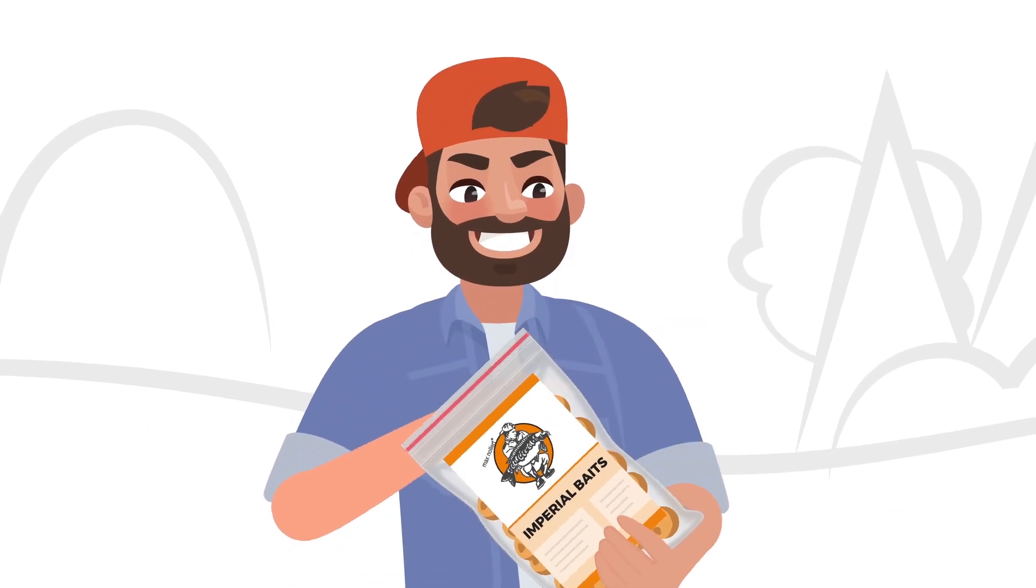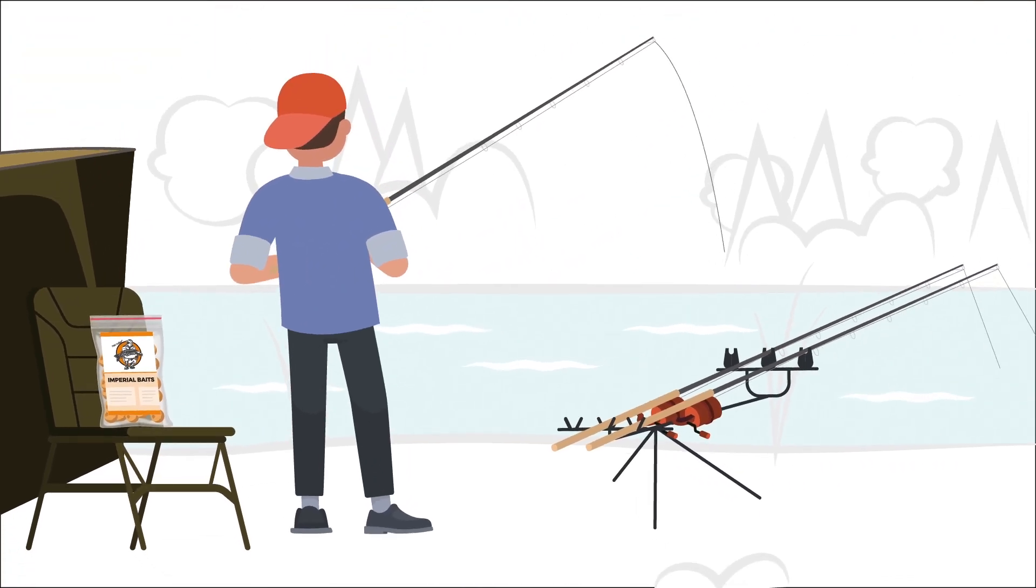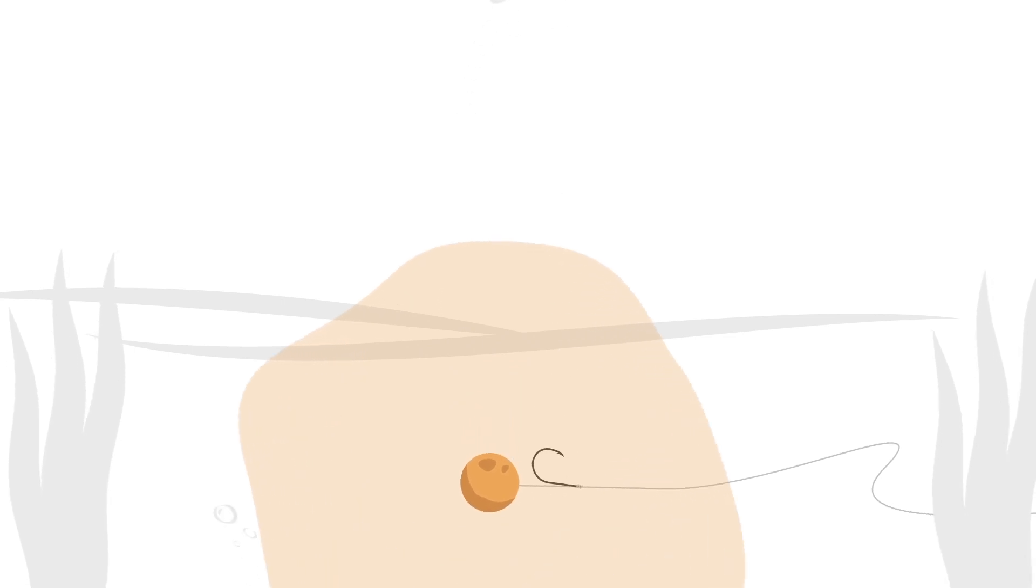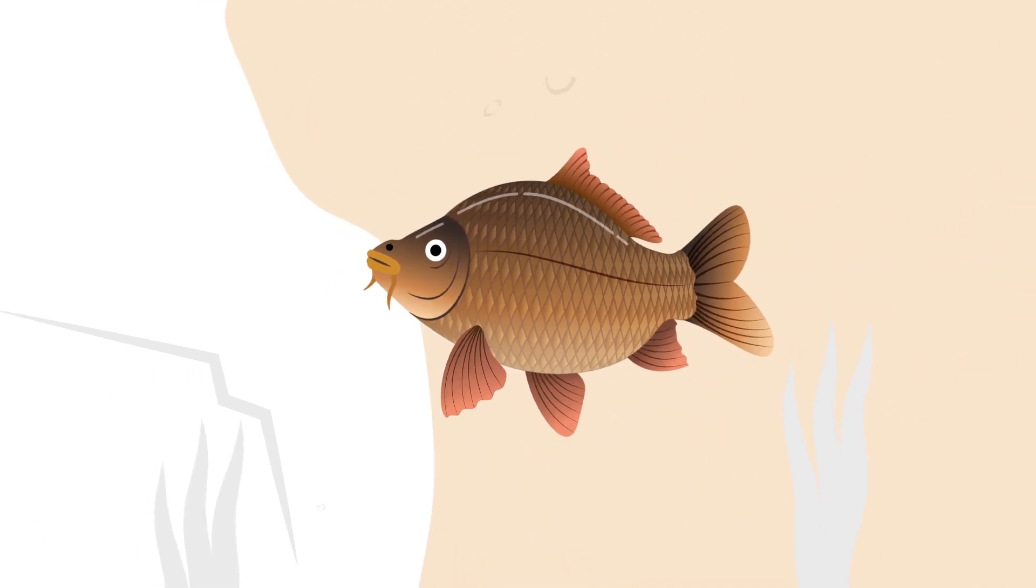They arrived the very next day, and Karsten got started right away. Imperial Baits boilies work instantly and attract the carp from far away.